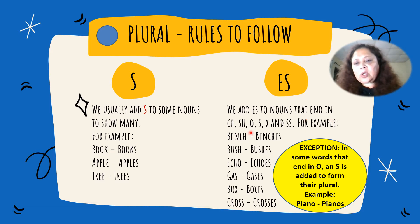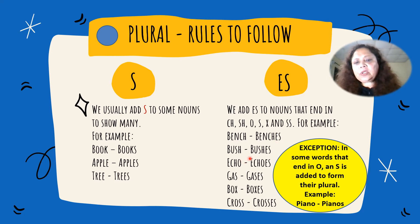We add ES to nouns that end in CH, SH, O, S, X, and SS. For example: bench, benches; bush, bushes; echo, echoes; gas, gases; box, boxes; cross, crosses.